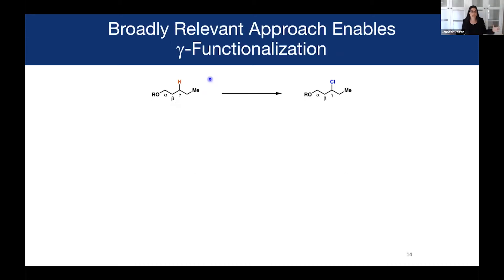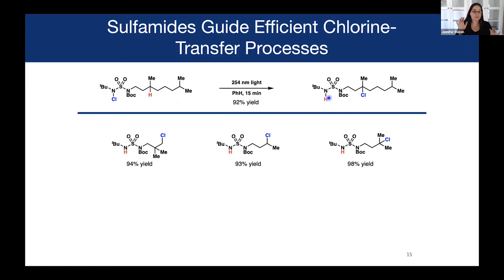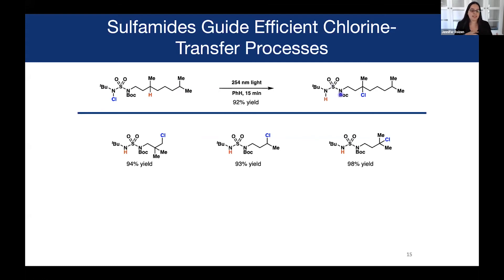Sulfamate esters are exquisitely selective, but amine derivatives — sulfamides — are capable of inducing similar selectivity with some predictable erosion. An N-chlorinated sulfamide substrate, in the presence of light using a couple different solvents, reacts at the gamma-disposed CH center, furnishing a chlorinated product. Notably, a more distal tertiary CH center is not reactive under these conditions — our first clue that we should be capable of overcoming innately selective processes. The reaction is effective at primary, secondary, and tertiary centers, and even with amino alcohol or amino acid derivatives.